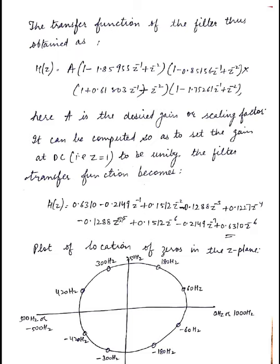Then - 0.1288 z^-5 + 0.1512 z^-6 - 0.2149 z^-7 + 0.6310 z^-8. So it should be z raised to power minus 8.